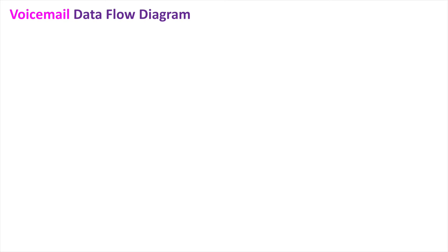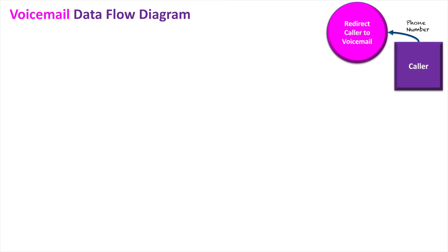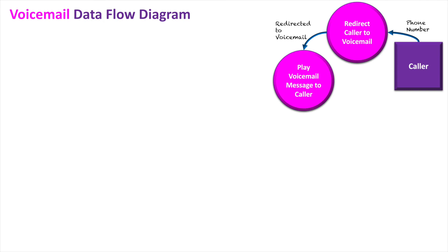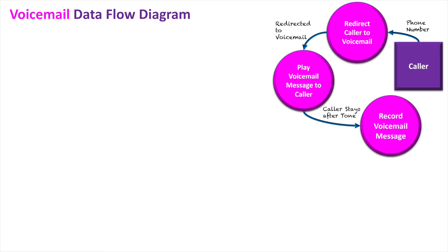So now let's look at it in the form of a data flow diagram. Once again, we're starting off with the caller — they've entered the phone number, no one answers the phone, so they get redirected to the caller's voicemail inbox. Once they get there, it plays the voicemail message to the caller, telling them 'please leave your message after the tone.' Now if they hang up before the actual tone plays, no message is going to be left. So the data needs to carry that the tone happens, they stay on long enough for that tone to happen, and then it begins recording the voicemail message of the caller.